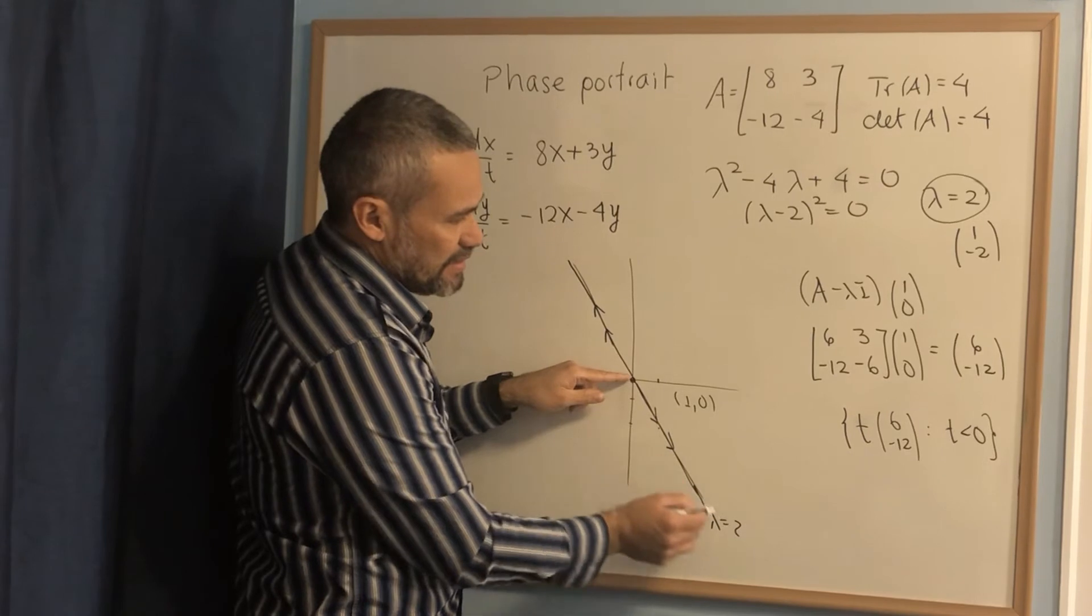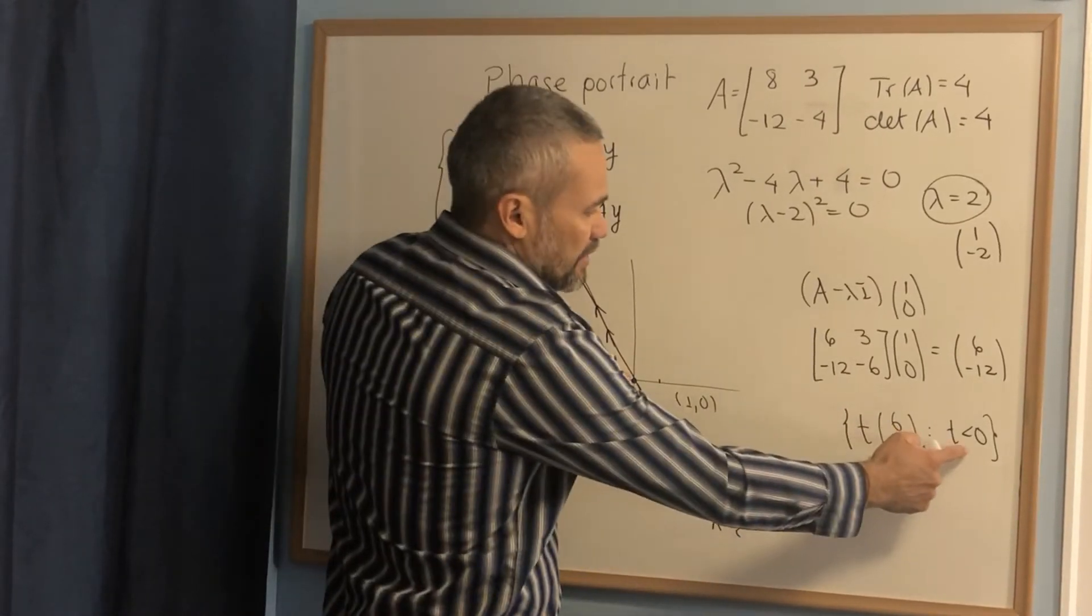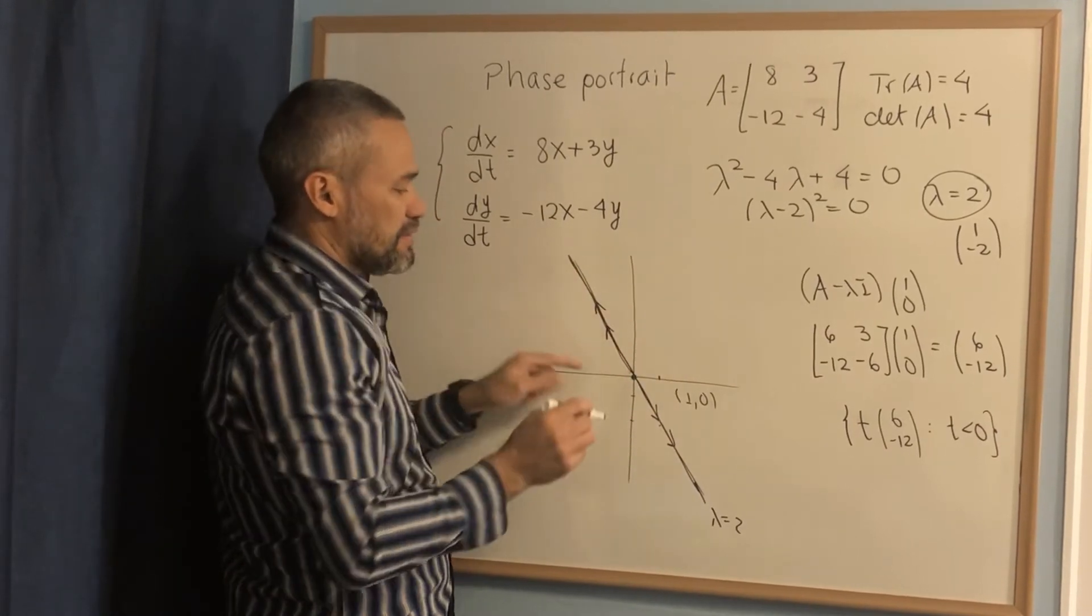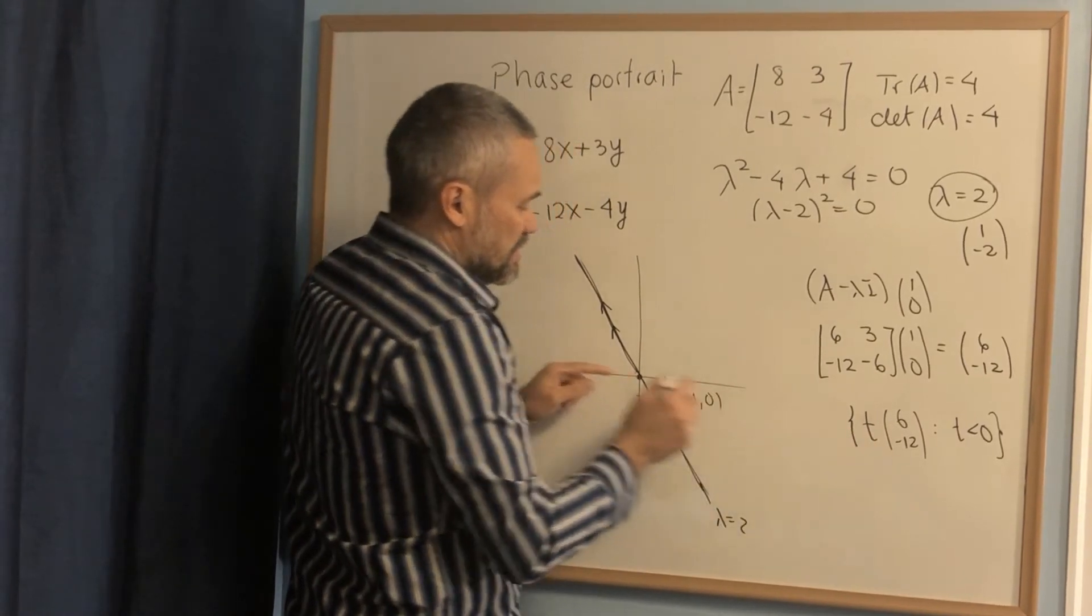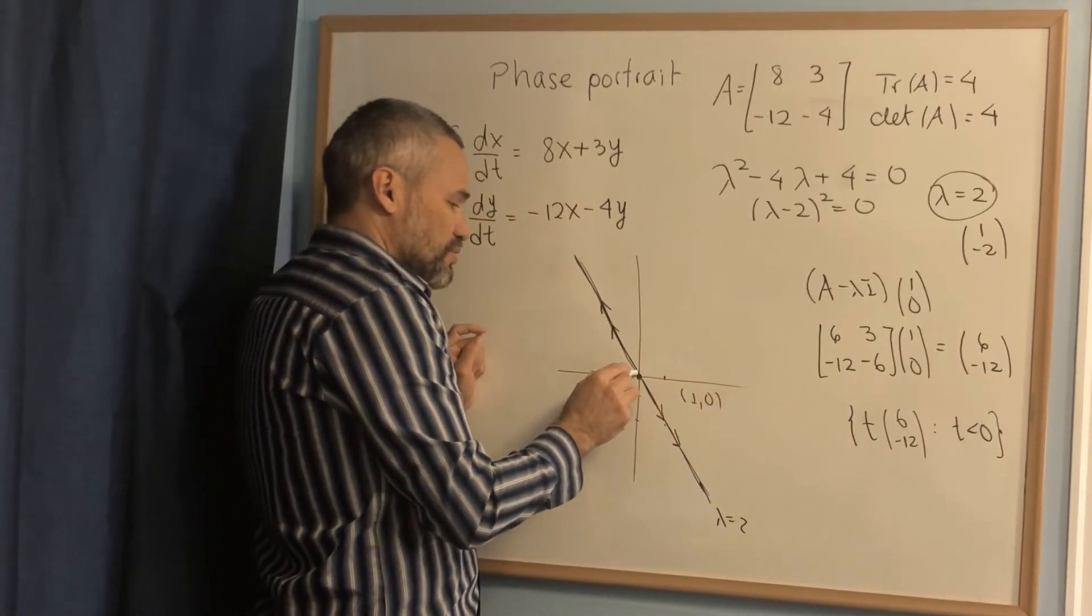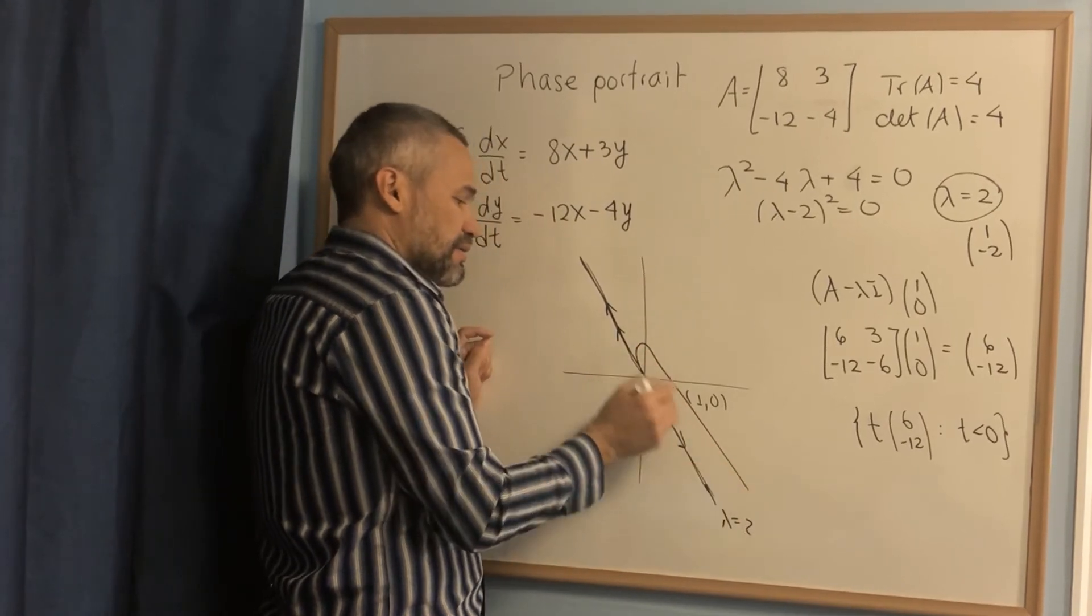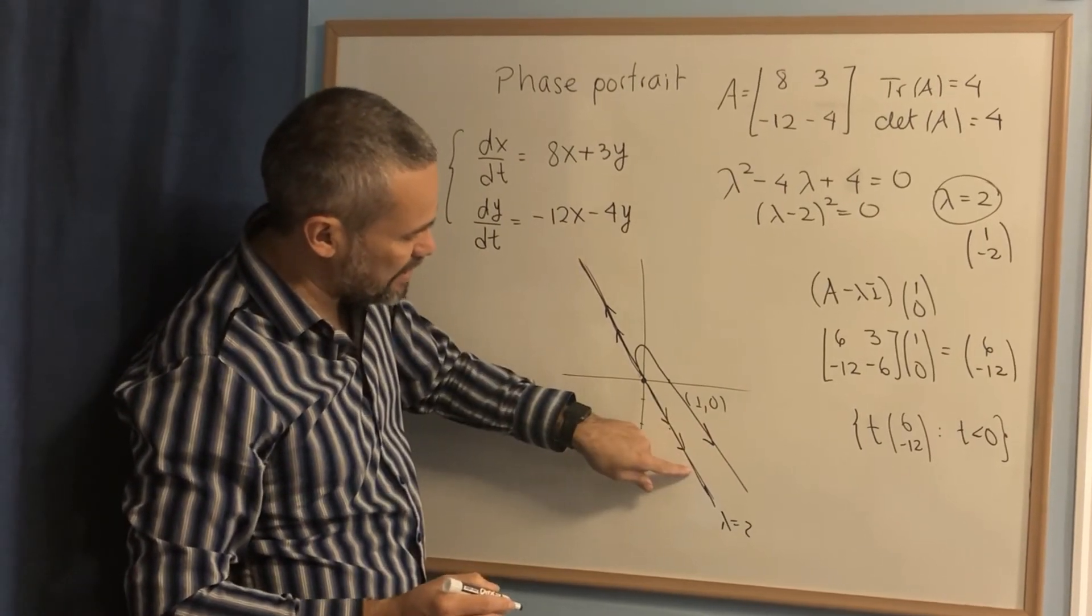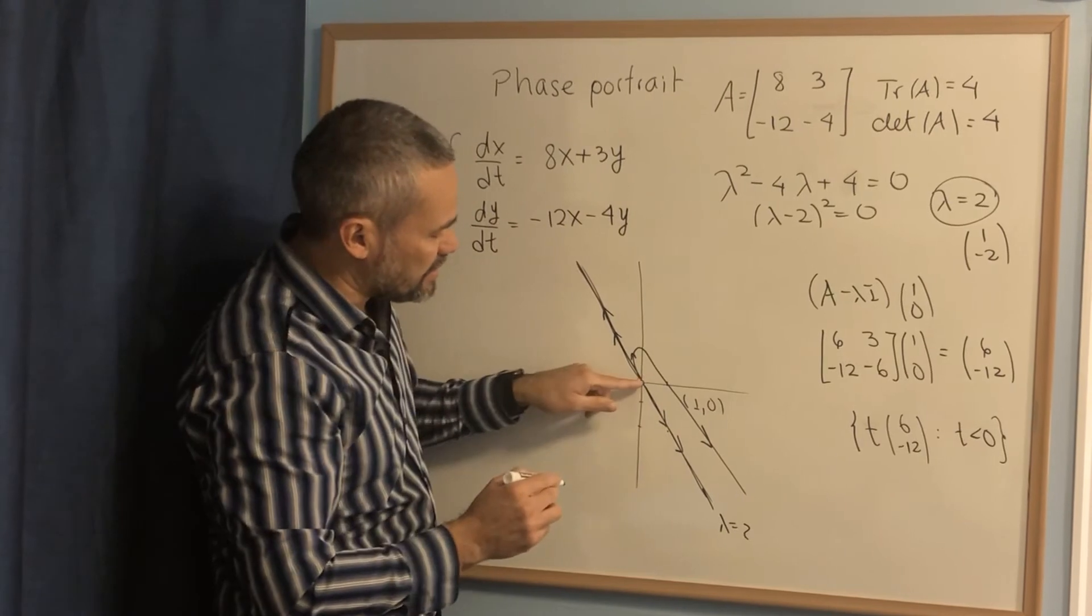This is the semi-line with t positive. But if we want t negative, that means we are referring to this semi-line. The rule says near the origin you are supposed to be close to this semi-line. Then we're going to do something like this. Far away from the origin, you are parallel to this semi-line. Near the origin, you are almost tangent.